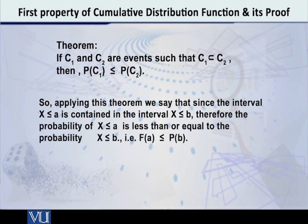If there are two events like this, one is a subset of the other one, then the probability of that smaller one will be less than or equal to the probability of the larger one. If the sets are equal, then the probabilities will also be equal. So applying this theorem, in half a second we get the result.